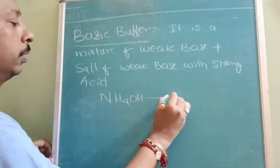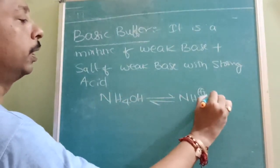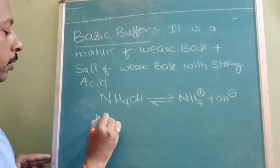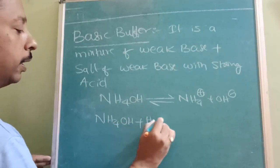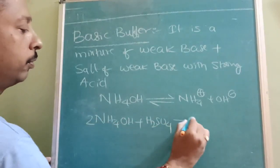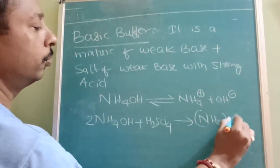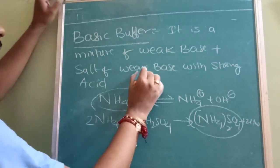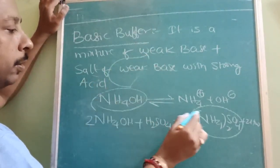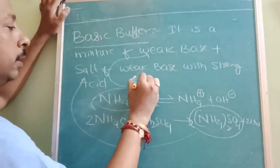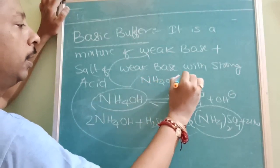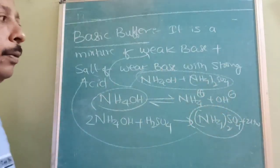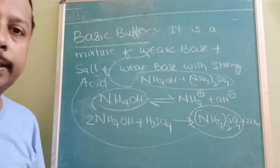Let us take NH₄OH as the weak base. NH₄OH gives NH₄⁺ + OH⁻. Using sulfuric acid H₂SO₄ — we have to take 2 moles — we get (NH₄)₂SO₄ + 2H₂O. So NH₄OH along with (NH₄)₂SO₄ — this combination is called a Basic Buffer.